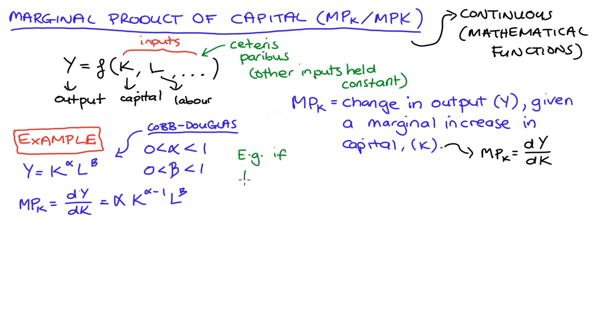So for instance, if L was 100, K was 25, and both alpha and beta were 0.5, if we substitute that into our formula we would get: marginal product of capital = 0.5 (that's alpha) times 25 (that's capital K) to the power of 0.5 minus 1, times 100 (that's our level of labor) to the power of 0.5 (that's beta).